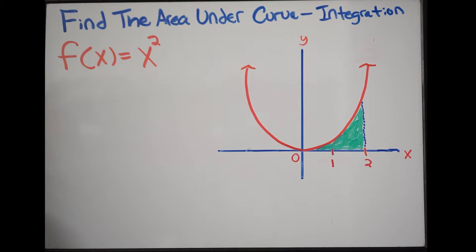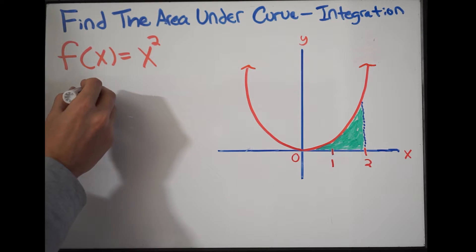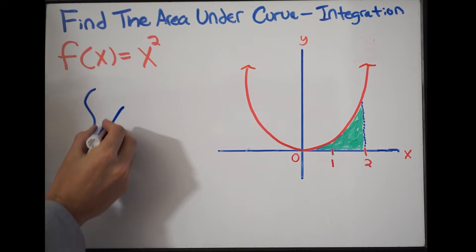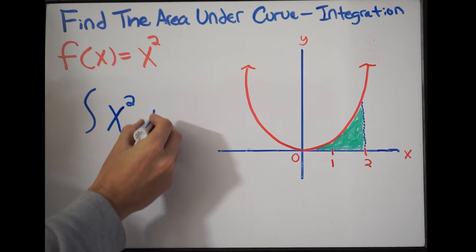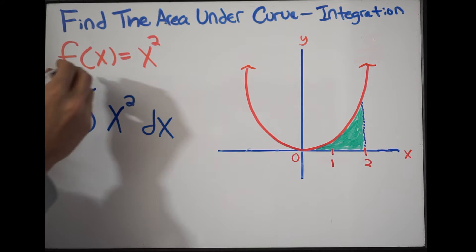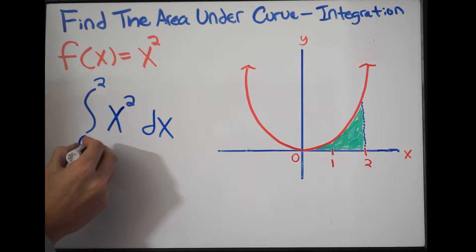Again, in order to find the area under the curve we must integrate. So we need to integrate x² with respect to x, and this is going to be from 0 to 2. This is often referred to as my upper limit while this is my lower limit. And this is going to be the area under the curve.